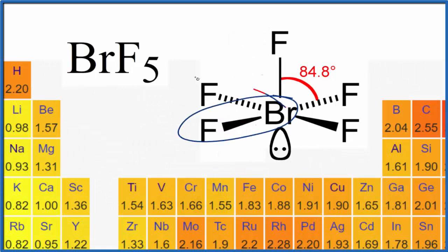...bromine and the fluorine—each individual bond is polar because of the difference in electronegativity. And then overall, we have this asymmetrical molecule that makes BrF5 a polar molecule. This is Dr. B.